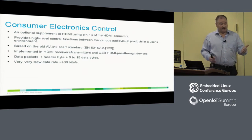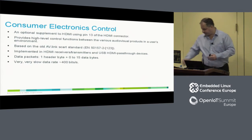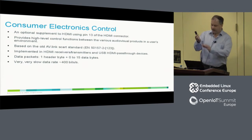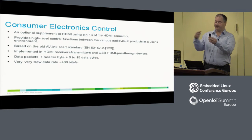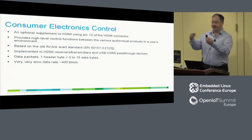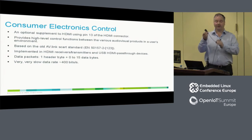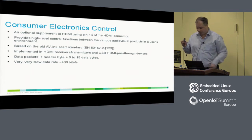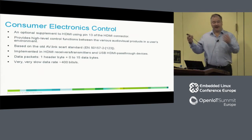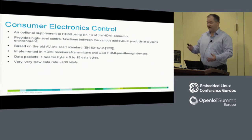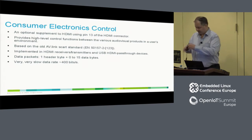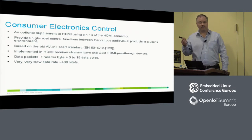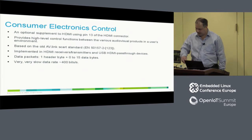CEC can be implemented in HDMI receivers, HDMI transmitters, and you also have USB dongles. This dongle connects to your PC — the PC goes in on one side, the TV on the other — and you can control CEC through USB on your PC. This is used a lot when people want to hook up their streaming PC or set-top box with a TV and the graphics card doesn't support CEC. These dongles are about $35 and they're quite popular.